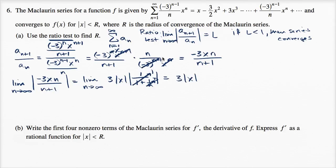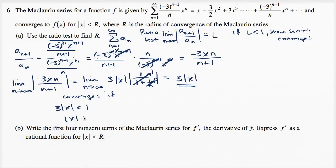Remember, the series converges if this limit is less than one. So it converges if three times |x| is less than one, or equivalently |x| is less than one third. We have just found our radius of convergence: r equals one third. This Maclaurin series converges as long as |x| is less than one third.